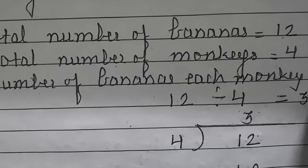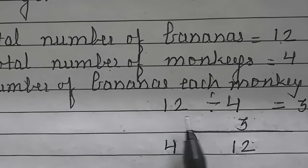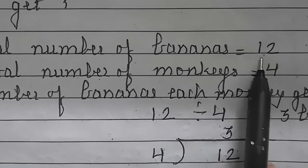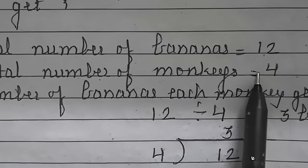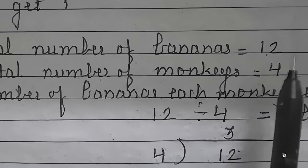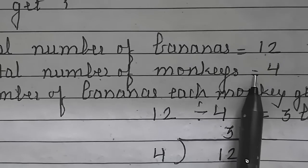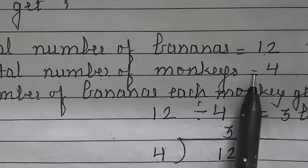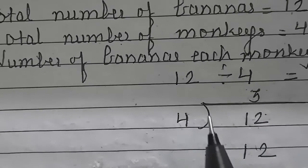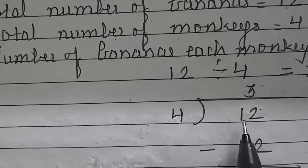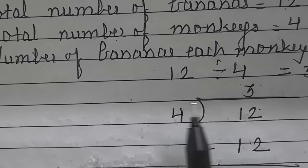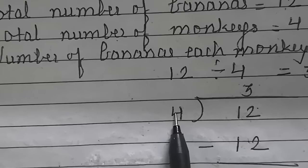So how we will find out? We will divide this total number of bananas with number of monkeys. So total number of bananas here are 12 and number of monkeys are 4.